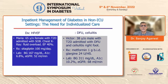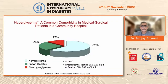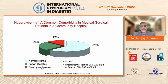My first premise is: never miss the diagnosis of diabetes at the time of admission. A paper by Dr. Umpira analyzed about 2,000 patients who came to hospital and defined hyperglycemia as a fasting blood glucose ≥126 or a random glucose ≥200. In this analysis, 62% had normal glycemia, 26% had a prior diagnosis of diabetes, but 12% were diagnosed with diabetes for the first time during hospitalization.